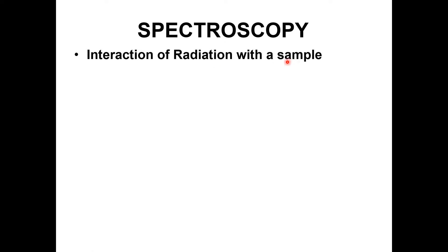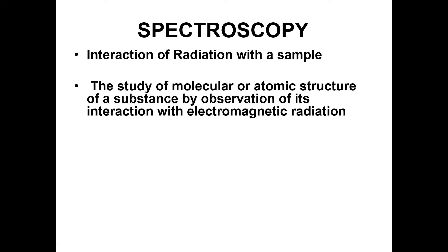From the spectrum we analyze and study the behavior of the material. With the help of spectroscopy, we study the molecular or atomic structure of a substance by observation of its interactions with electromagnetic radiation. That is the thing that we actually do in spectroscopy — we observe the substance through the interactions of electromagnetic radiations with its molecules or atomic structures.